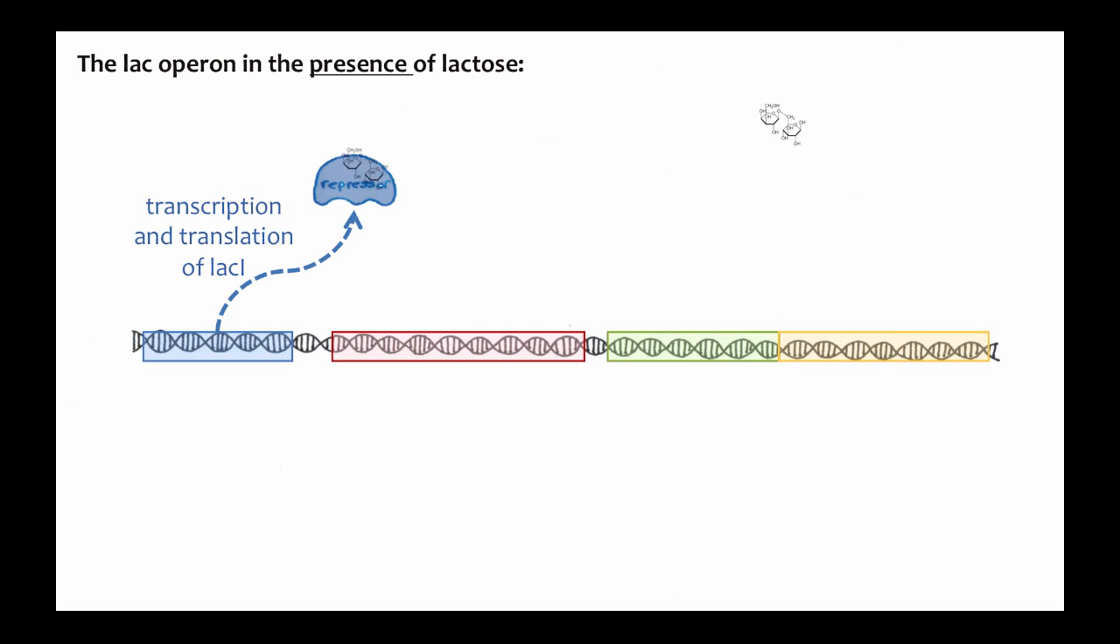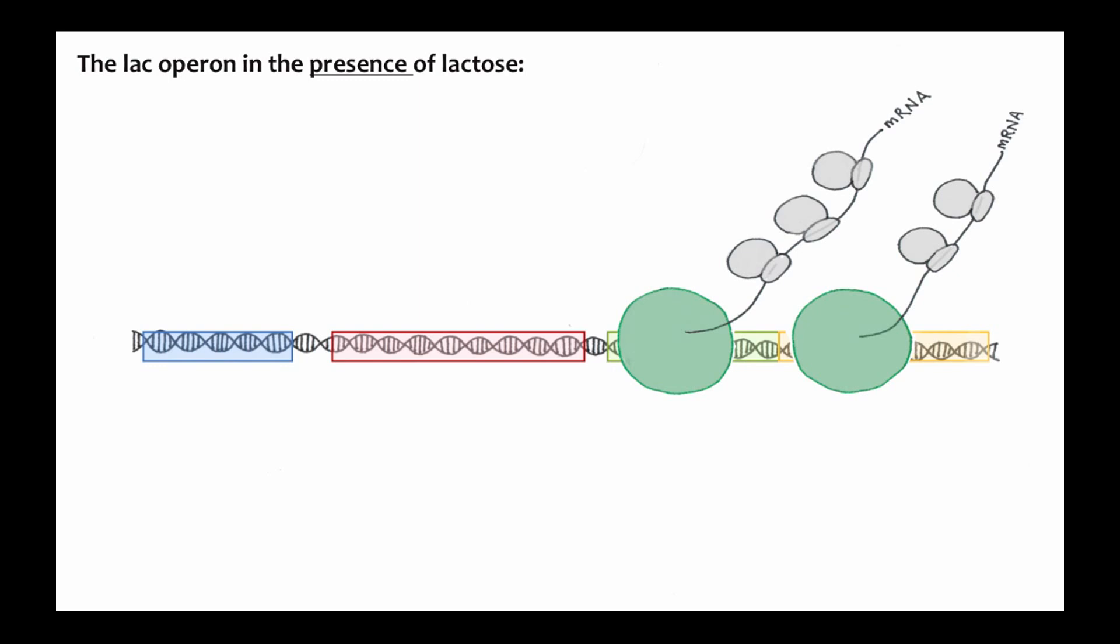So how does this affect the behavior of the repressor protein? The repressor protein with allolactose bound to it does not bind to the control region of the operon. So now, after RNA polymerase has bound to the promoter, it is able to move down the DNA and the lac Z and lac Y genes are transcribed and translated. Lactose can now be brought into the cell and used as an energy source.